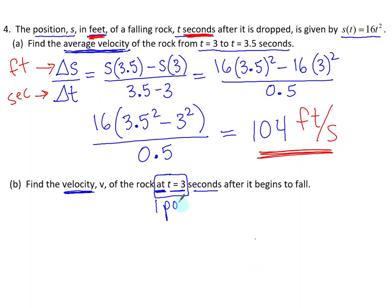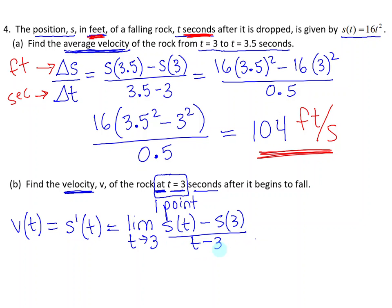When it's one point in time, a rate of change is a derivative. So this velocity, we're calling it v of t, is the derivative of the position s prime of t, which is the limit as t approaches that one point in time, 3 seconds, of the change in position s of t minus s of 3, over the change in time, t minus 3.